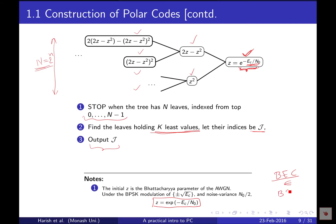If you were using BEC, the Bhattacharya parameter is simply the erasure probability epsilon. If it's a binary symmetric channel, the initial value is square root of 4p(1-p), which is the Bhattacharya parameter when the transition probability is p. It's quite simple.